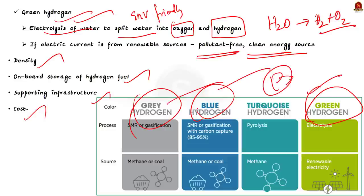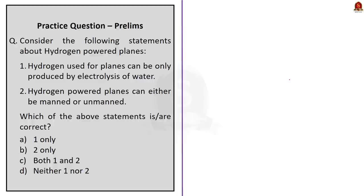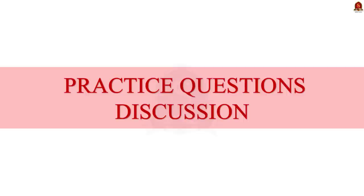In this discussion we covered what is blue hydrogen, gray hydrogen, and green hydrogen — all very important for your preliminary examination. This science-related topic is very much going to be useful for your upcoming preliminary examination, so note down each and every point and utilize it for your revision.